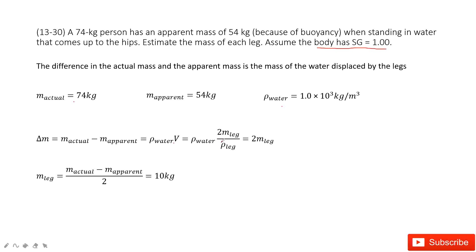So times 2. And then we know the density for the water and the density for the leg equals, because it tells us the body has SG equal to 1.00. Now we can solve this equation. We find the mass of the legs is just around 10 kg.